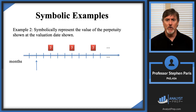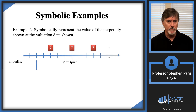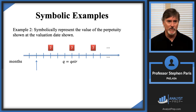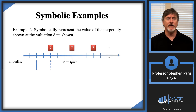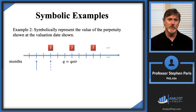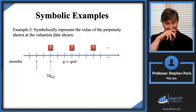The payments are quarterly, so I know I'll need a quarterly effective interest rate somewhere in the problem — let me denote that by Q. Once again, I don't have a single symbol to represent the value of this perpetuity at the valuation date, so I have to take some intermediate valuation date.